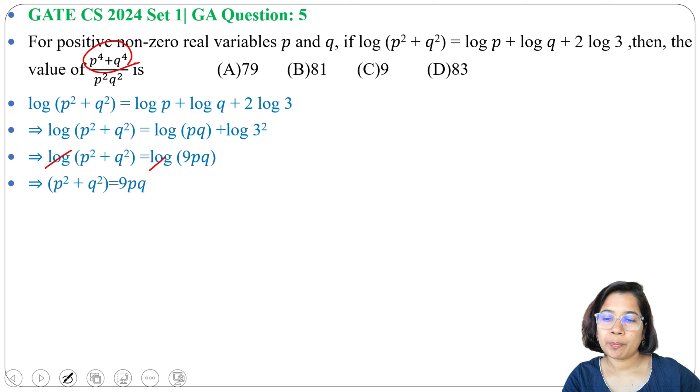So (p² + q²)² = (9pq)². And we know (a + b)² = a² + b² + 2ab. Here a = p² and b = q². So it will be p⁴ + q⁴ + 2p²q² equals 81p²q².